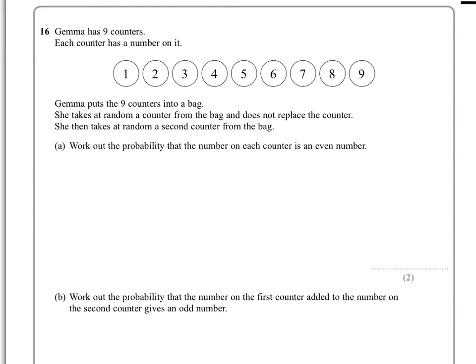We need to work out in part A the probability that the number on each counter is even. So the probability that she gets an even and another even. So that means on the first one she gets an even.